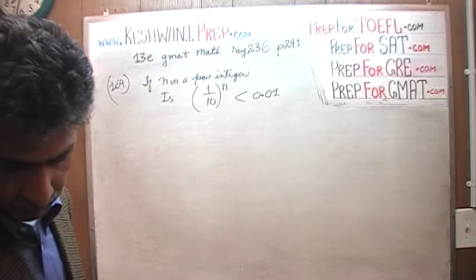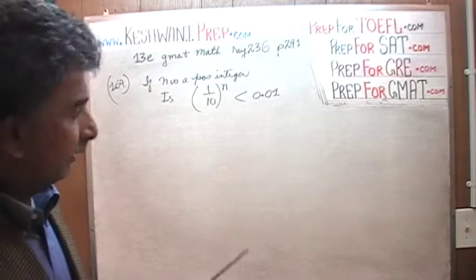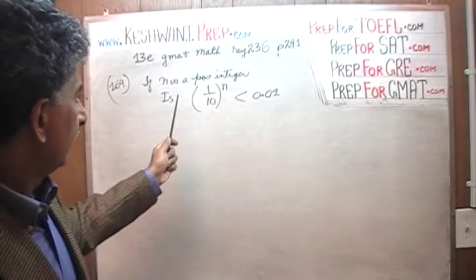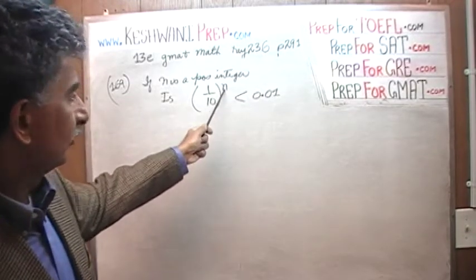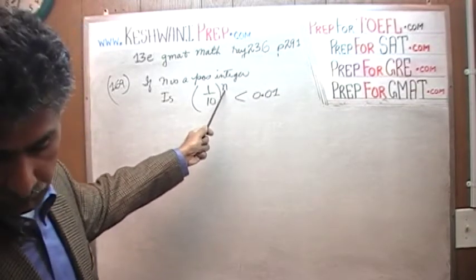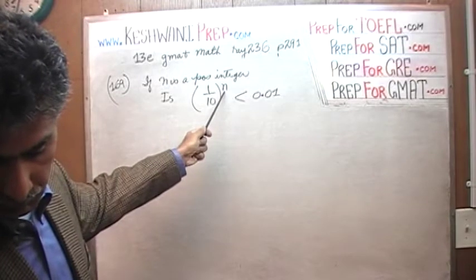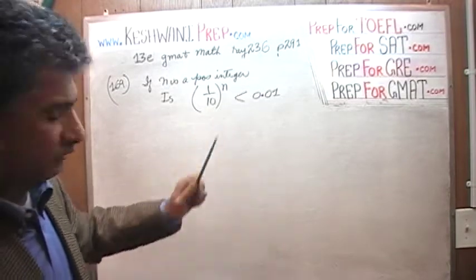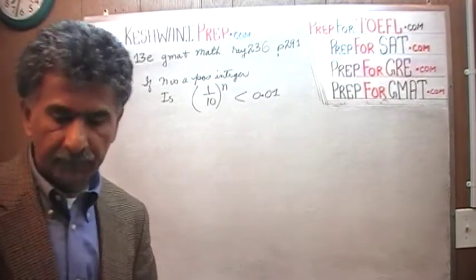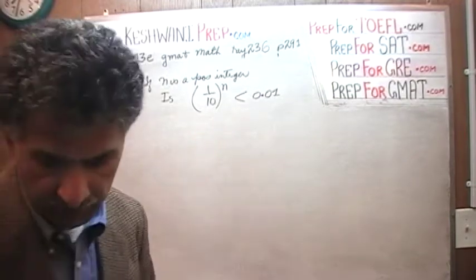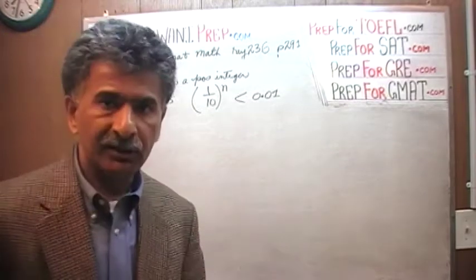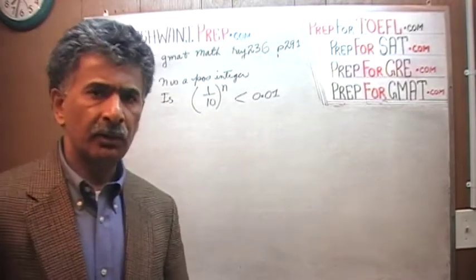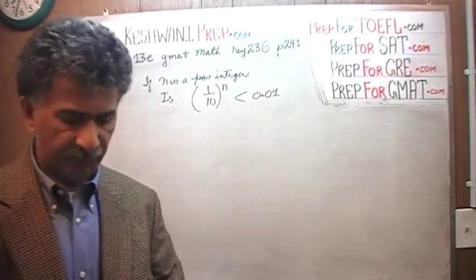It says: if n is a positive integer, is 1 over 10 raised to n less than 0.01? In a situation like this, when we are given an equation, an inequality, an expression...